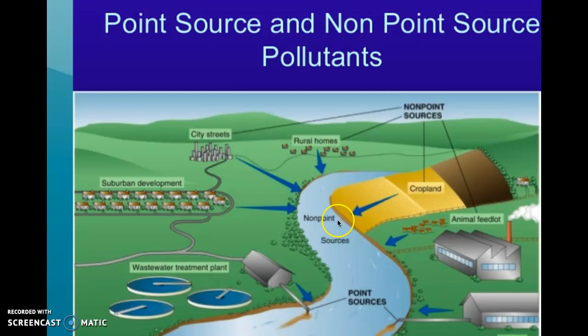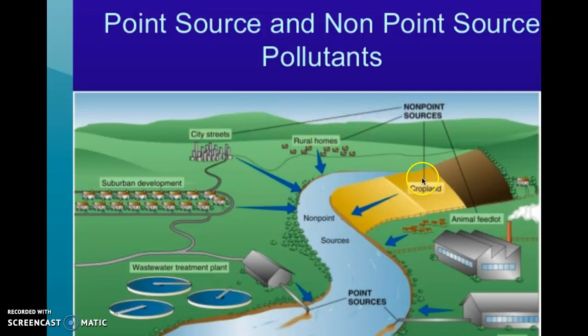As you can see in this drawing, we have suburban development, city streets, rural homes, and croplands and animal feedlots. These are all sources of non-point source pollution.